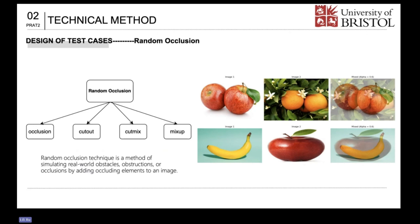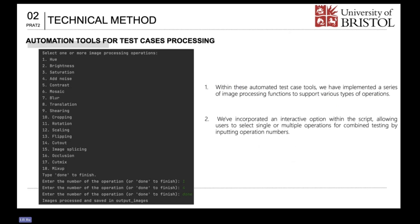Next, let's introduce the automated tools for test cases. Within these automated test case tools, we have implemented a series of image processing functions to support various types of operations. This tool is allowing users to select single or multiple operations for combined testing by inputting operation numbers. This enables users to freely choose and apply different image processing operations according to the specific requirements of their tasks.